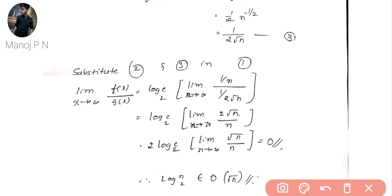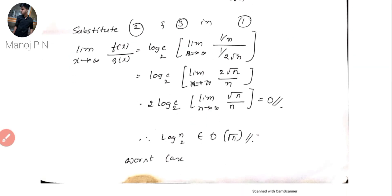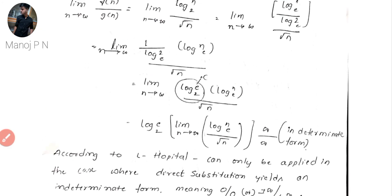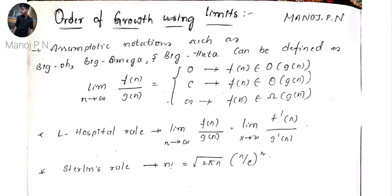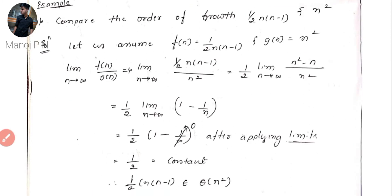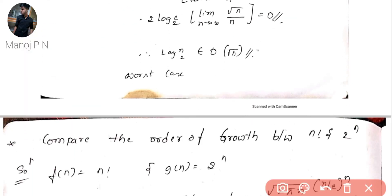Substituting, we get the constant log e base 2 multiplied by limit n→∞ of (1/n) divided by (1/(2·root n)). After shifting terms to the numerator, we get 2 as a constant and are left with root n divided by n. When we apply the limit, this becomes zero, which corresponds to Big O.